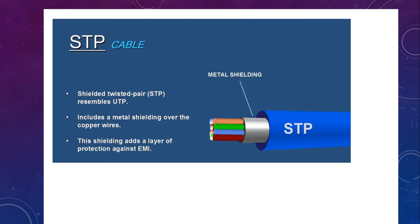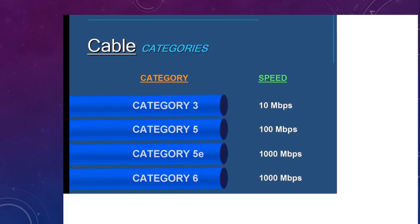Then we have STP cable, which stands for Shielded Twisted Pair. It includes a metal shielding over the copper wire. This metal shielding helps protect the cable from electromagnetic interference.